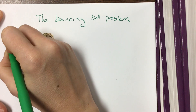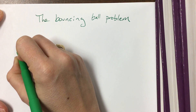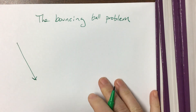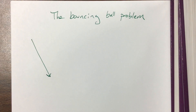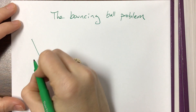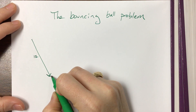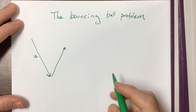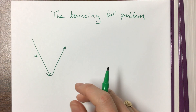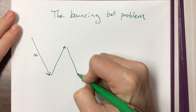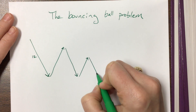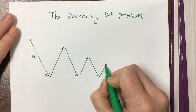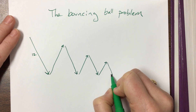Let's say we've dropped a ball off of the senior bridge. The ball falls from 12 feet high, and then it bounces up 75% of its original height. Then it falls from there and hits the ground again, bouncing up 75% of that height, and keeps going.